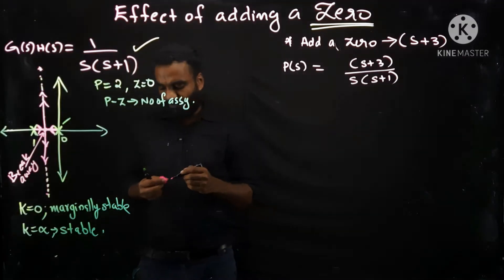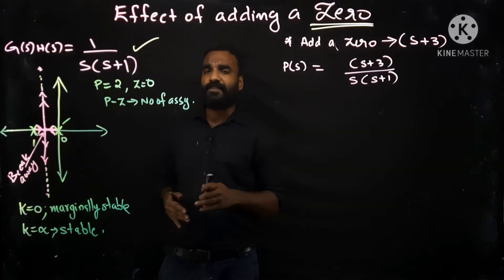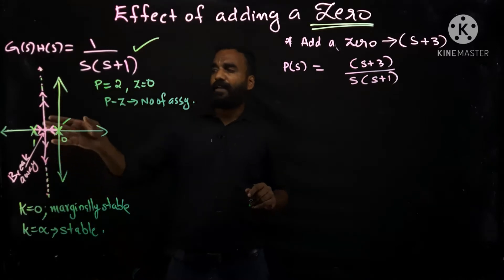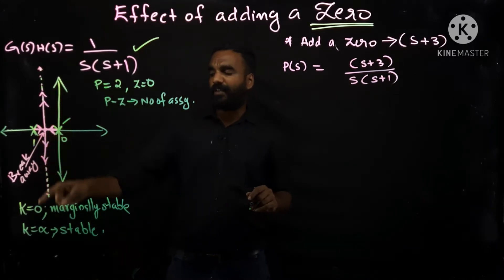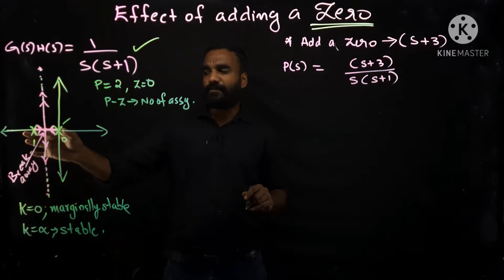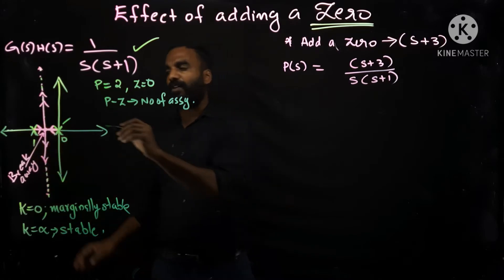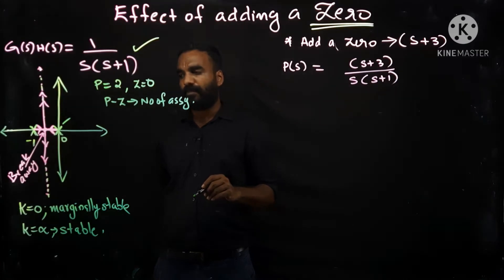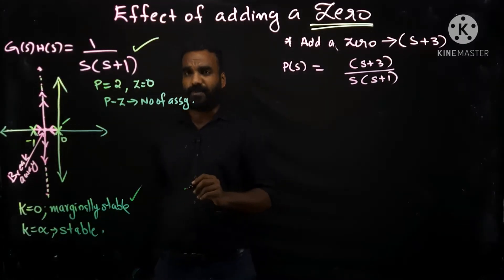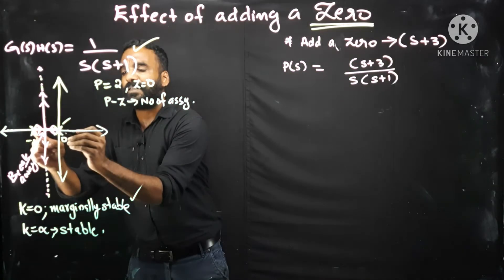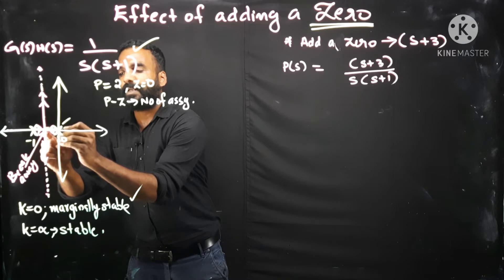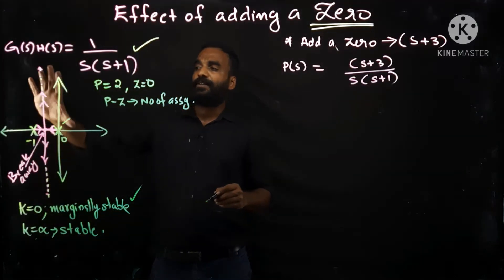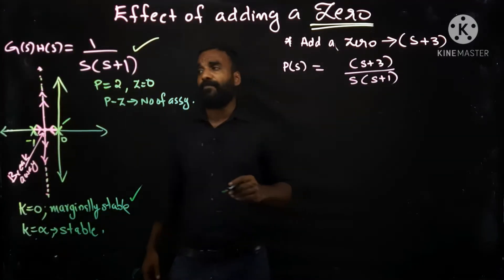This is the root locus diagram — each step was explained in detail in the previous class; refer to that video if you have doubts. From the root locus diagram we can see that when k=0 we have only the poles as starting points of each branch: one pole at s=0 and one at s=-1. Since one pole is touching the imaginary axis, the system is marginally stable at k=0. As k increases, the branches start moving, meet at the breakaway point, and then travel towards infinity.